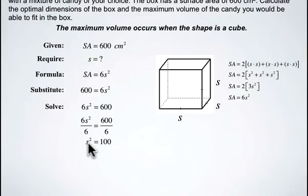To get rid of this operation of squaring we need to take the square root. When you take the square root of both sides you end up getting s equals 10 centimeters.